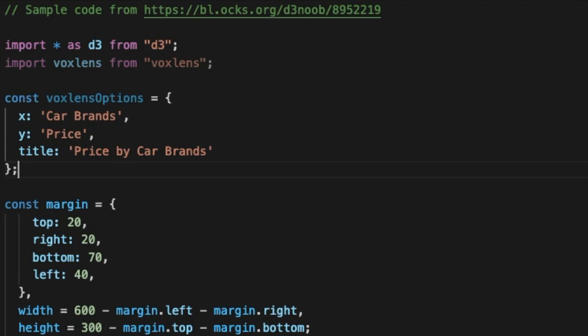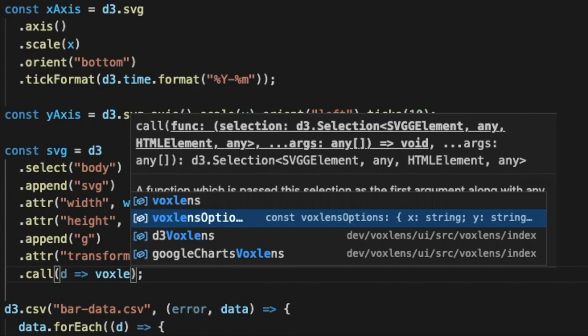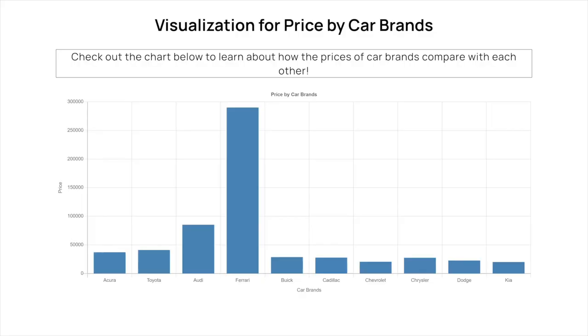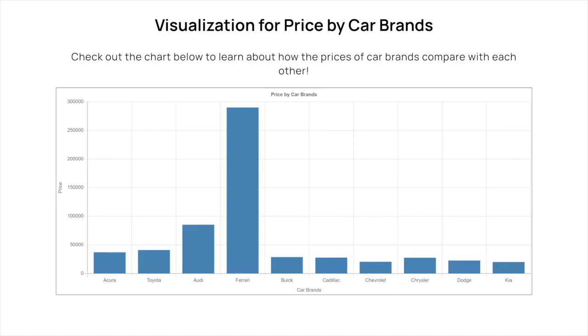Let's see Voxlens in action. [Screen reader]: Graph with title, price by car brands. To listen to instructions on how to interact with the graph, press Ctrl+Shift+I or Ctrl+Shift+4. The screen reader user can listen to detailed instructions if they choose to interact with the visualization.